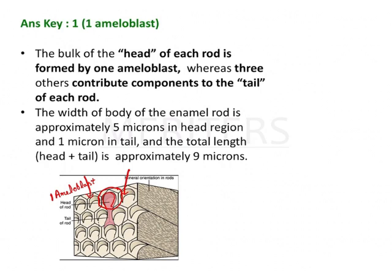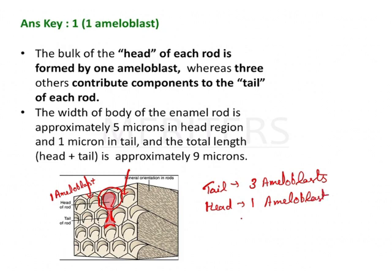The second ameloblast is this one, the third ameloblast is this one, and the fourth ameloblast is this one. That means the tail is partly contributed by three ameloblasts and the head is formed by one ameloblast. So each enamel rod is formed by one plus three — one for the head and three contributing to the tail region. Each ameloblast contributes to four enamel rods, and each enamel rod is formed by four different ameloblasts.